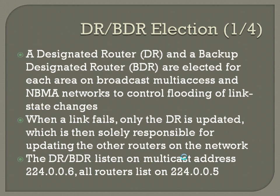The designated router (DR) and backup designated router (BDR) are elected for each area on broadcast multi-access and non-broadcast multi-access networks to control flooding of link state changes. When a link fails, only the DR is updated, which is then solely responsible for updating the other routers on the network. The DR and BDR listen on multicast address 224.0.0.6, while all routers in the area listen on 224.0.0.5.